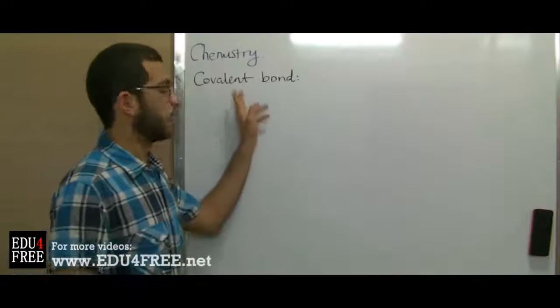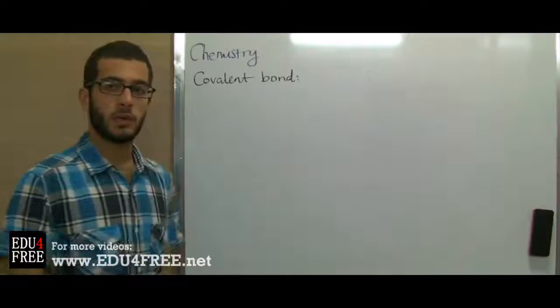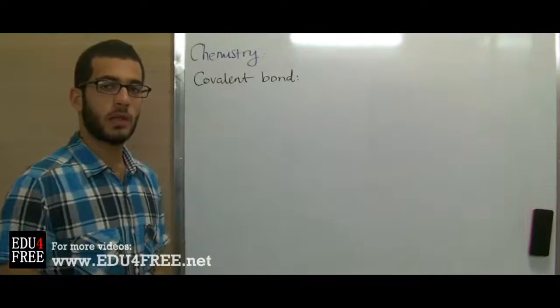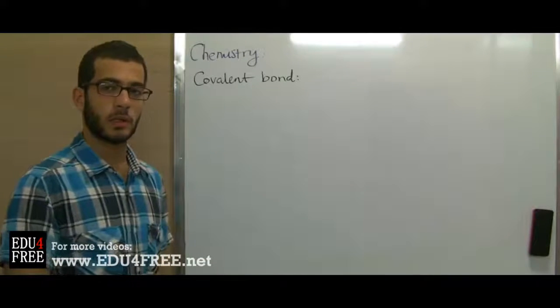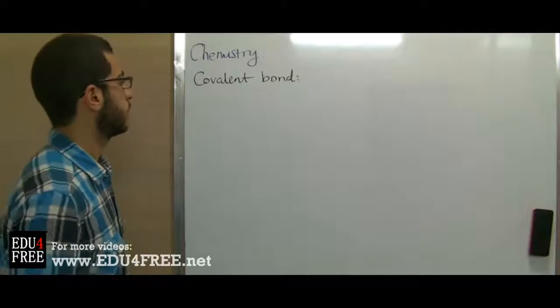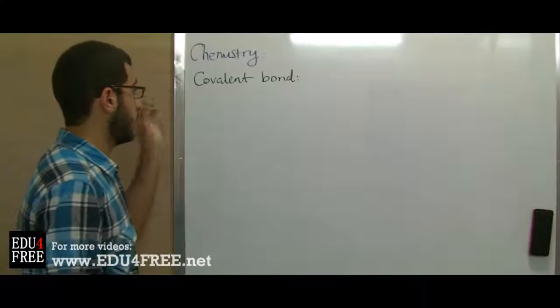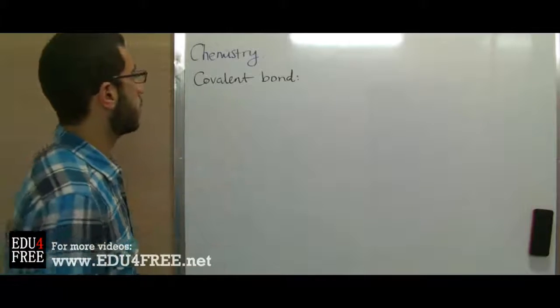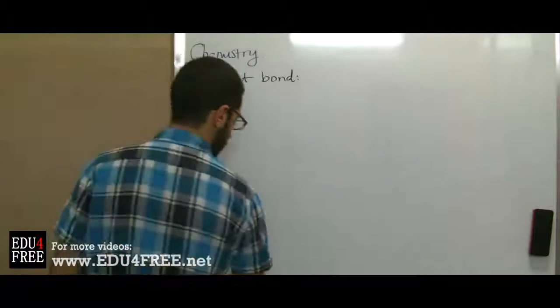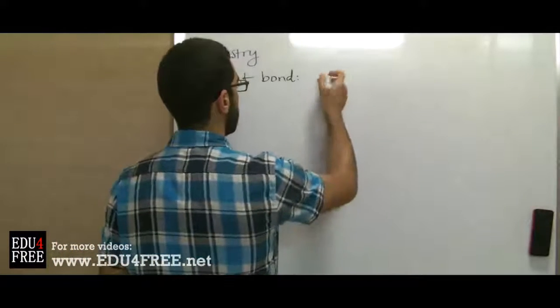Today we will talk about covalent bonds. Previously we talked about ionic bonds and we said that they don't have a materialistic existence because they occur due to electrostatic attraction.